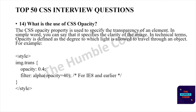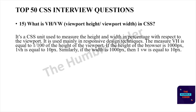What is vh or vw — viewport height and viewport width — in CSS? It is a CSS unit used to measure height and width in percentage with respect to the viewport. It is used mainly in responsive design techniques. 1vh is equal to 1/100 of the height of the viewport. If the height of the browser is 1000 pixels, 1vh equals 10 pixels. Similarly, if the width is 1000 pixels, then 1vw equals 10 pixels.